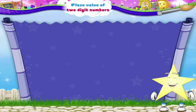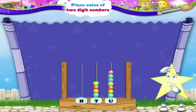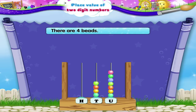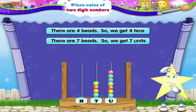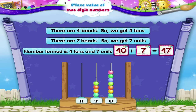Take a look at this abacus. How many beads are there in the tens column? There are 4 beads, so we get 4 tens. In the units column, there are 7 beads, so we get 7 units. Can you tell which number is formed? 4 tens and 7 units means 40 plus 7, that is 47.